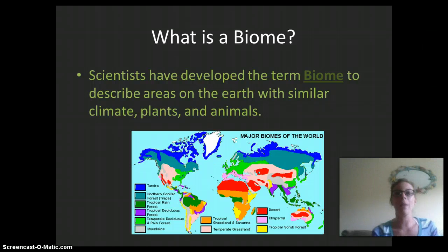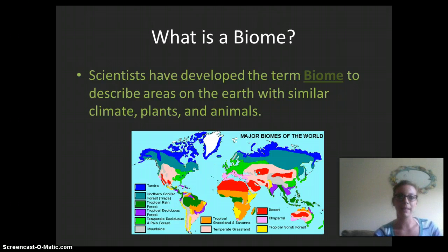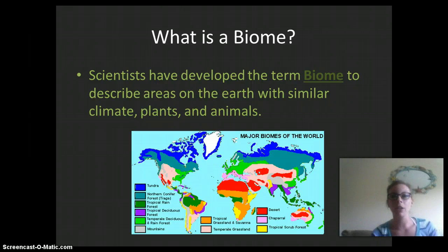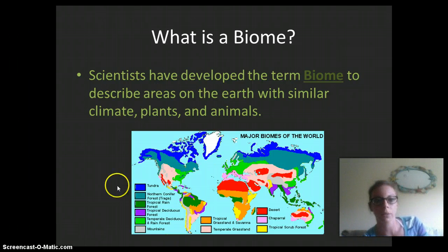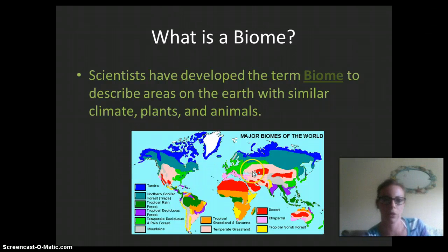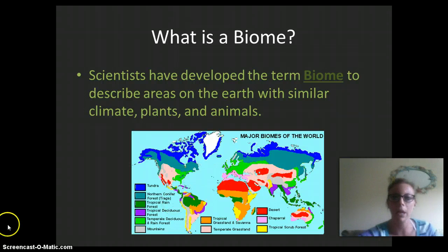So what is a biome? It is going to describe areas on the earth with similar climate, plants, and animals. So they'll have similar abiotic factors such as climate, precipitation, and temperature, and then also the biotic factors — plants and animals. They can also almost always be found at a similar latitude, as you can see from the different colors found in similar areas on the map.